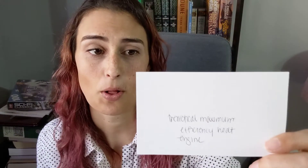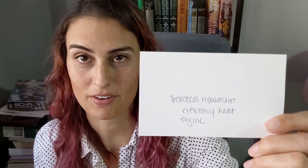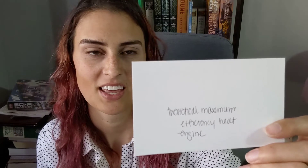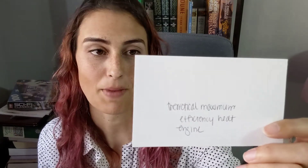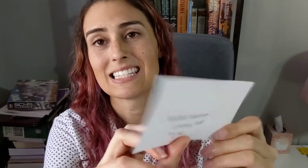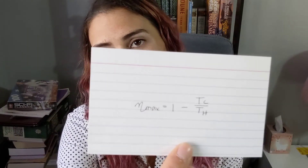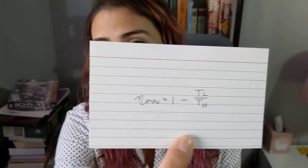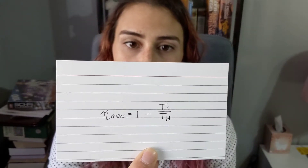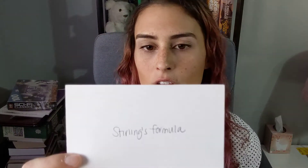The theoretical maximum efficiency for a heat engine is eta max equals 1 minus T_C over T_H, where those are the temperatures associated with the cool and hot sinks.